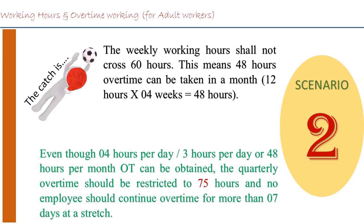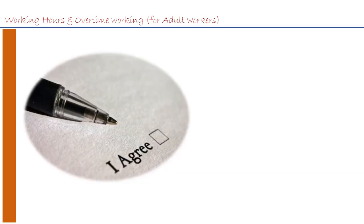The next catch is that even though 4 hours per day, 3 hours per day, or 48 hours per month of overtime can be obtained, the quarterly overtime should be restricted to 75 hours. This is the quarterly ceiling available as per the provisions of the Factories Act under Section 65. Additionally, no employee should continue overtime for more than 7 consecutive days at a stretch. This is the second catch, also as per Section 65.